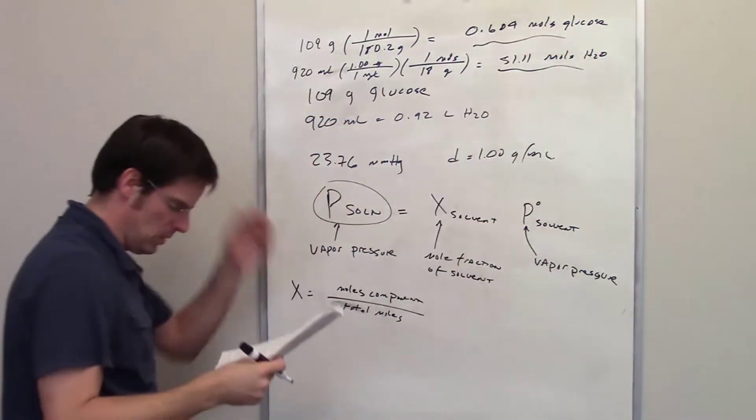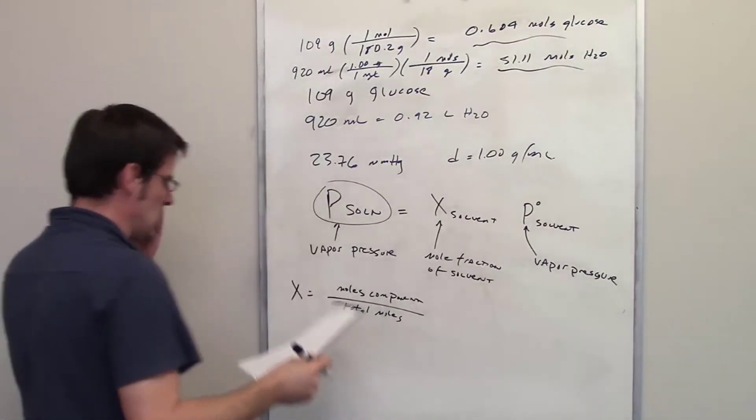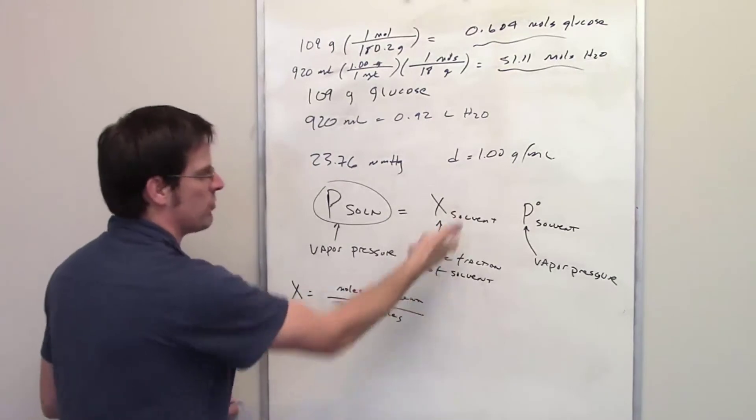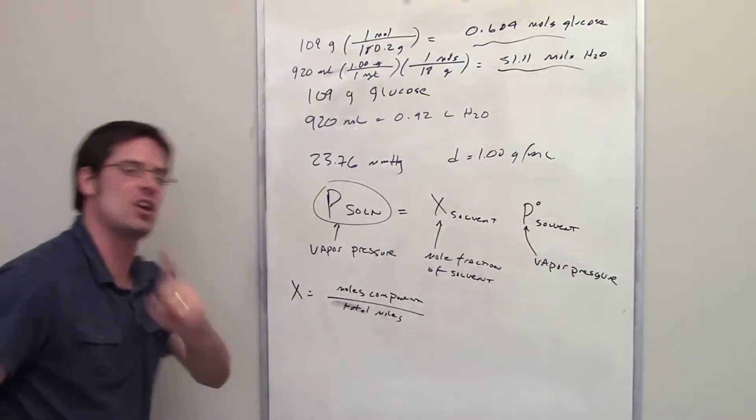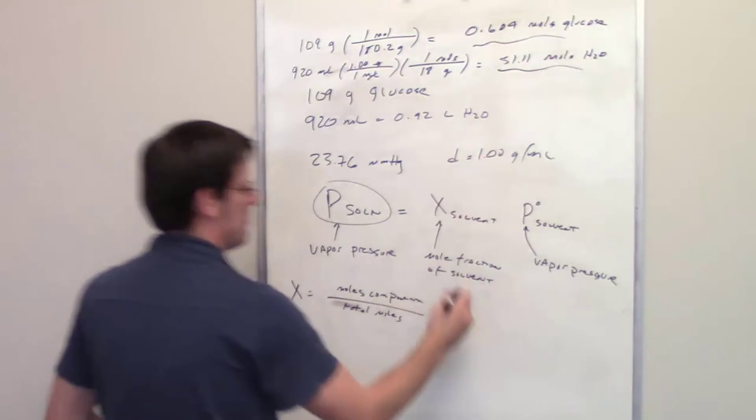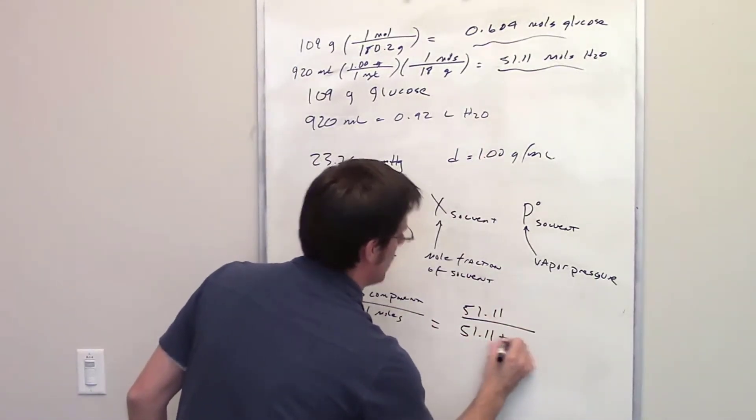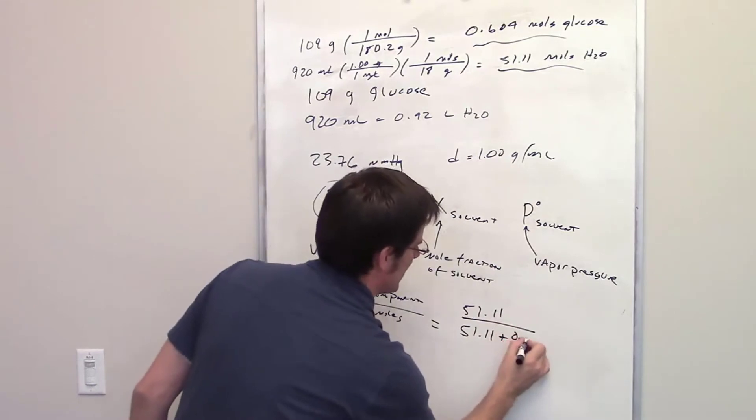So I have moles of glucose, I've got moles of water. I'm trying to determine the mole fraction of water, of the solvent, not the solute in this case. So that's going to be 51.11 divided by 51.11 plus 0.604.